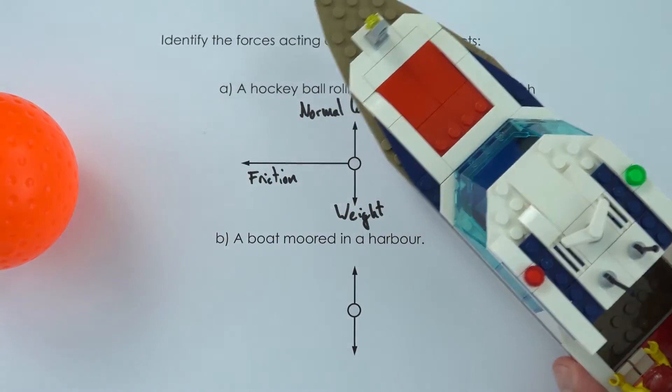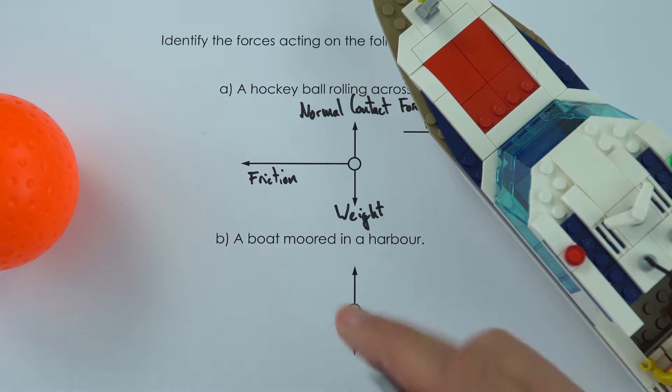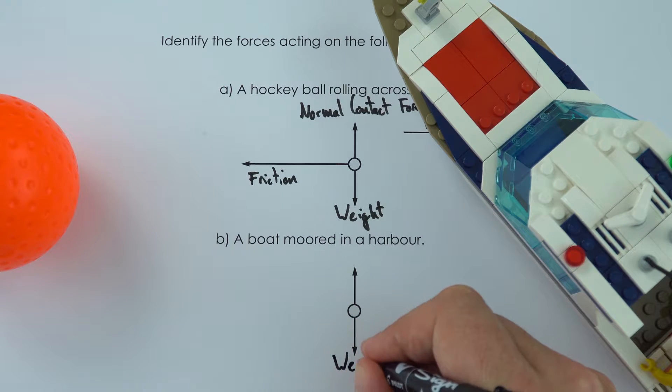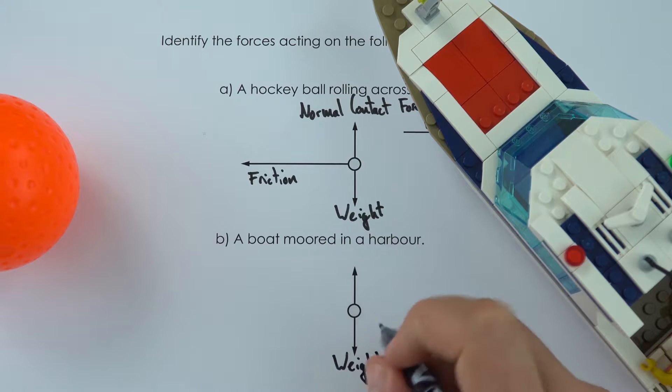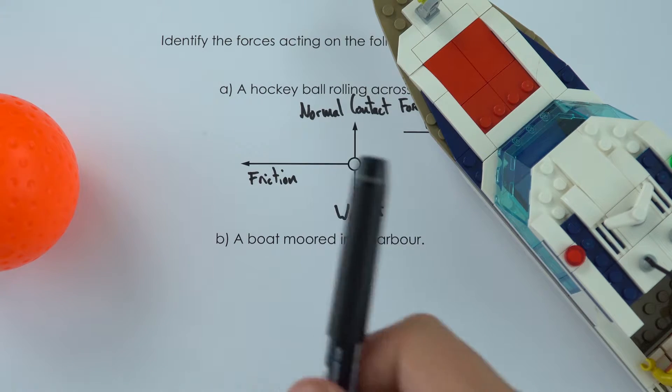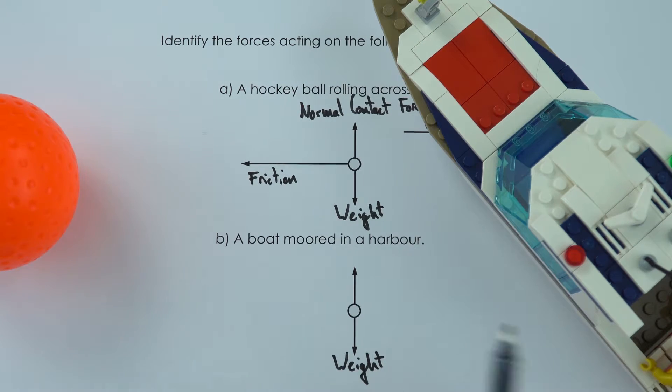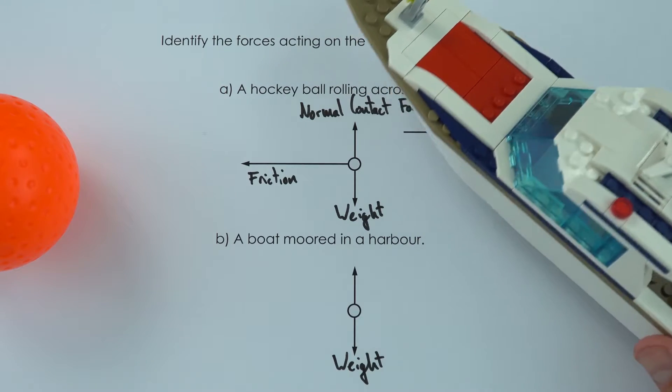And now for this, there's going to be a downwards force which is due to its weight, and what you'll find is that in 99% of the times the downwards force is always going to be caused by the weight which is the mass of an object in a gravitational field.